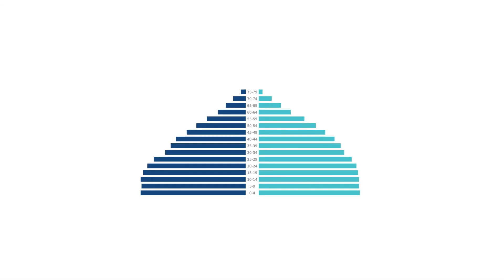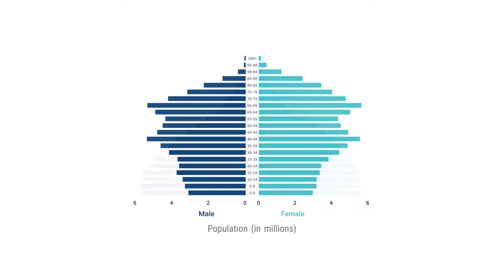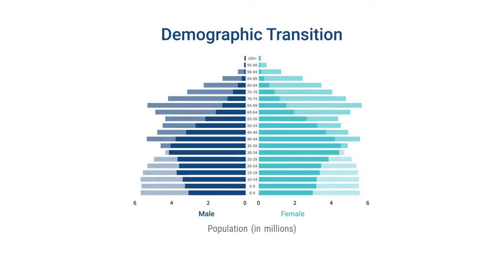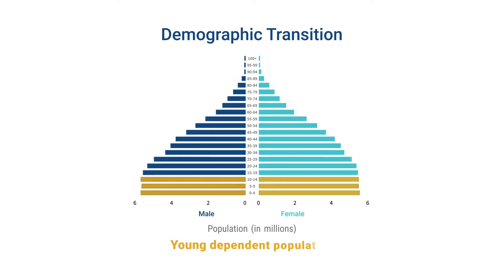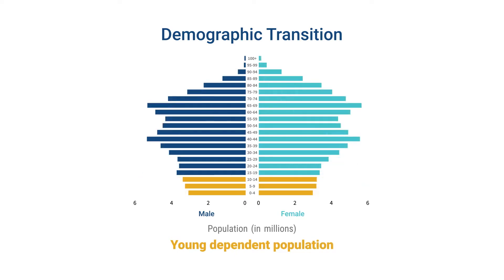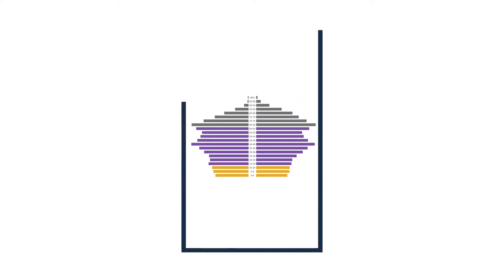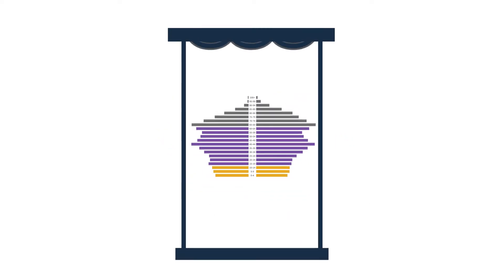Age structure change occurs in the long-term shift from high to low mortality and fertility, also known as the demographic transition. With fewer births each year, a country's young dependent population shrinks relative to the population of working age adults. The decline in the child dependency ratio creates a window of opportunity for countries to increase investments in social and economic policies that fuel economic growth.